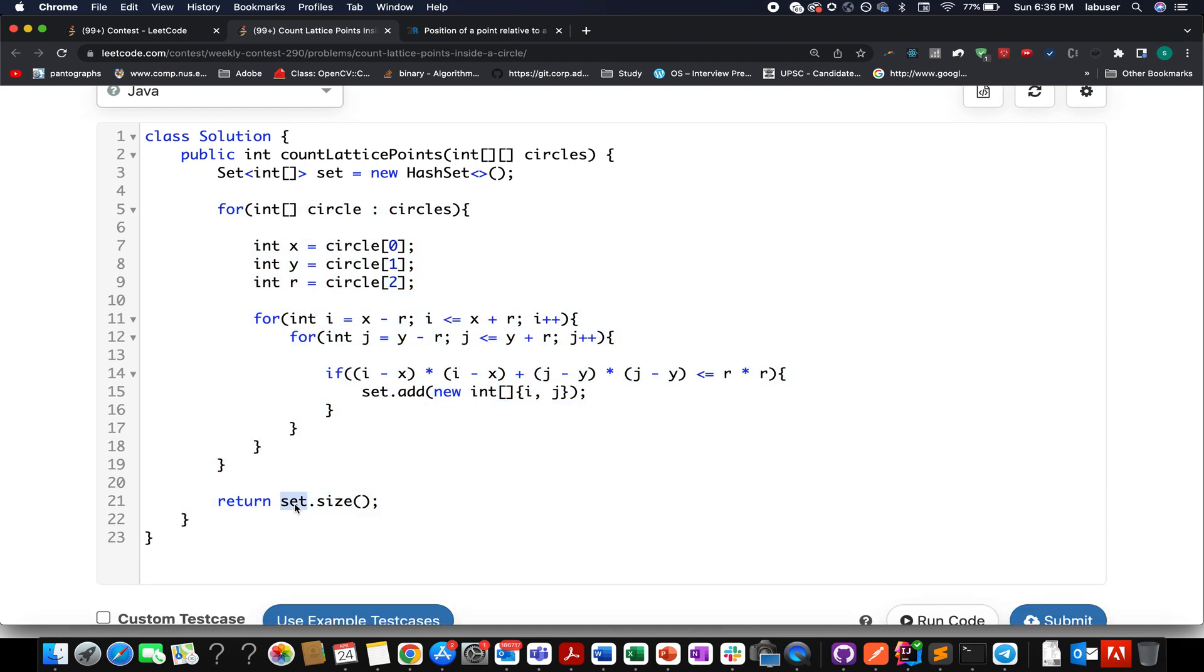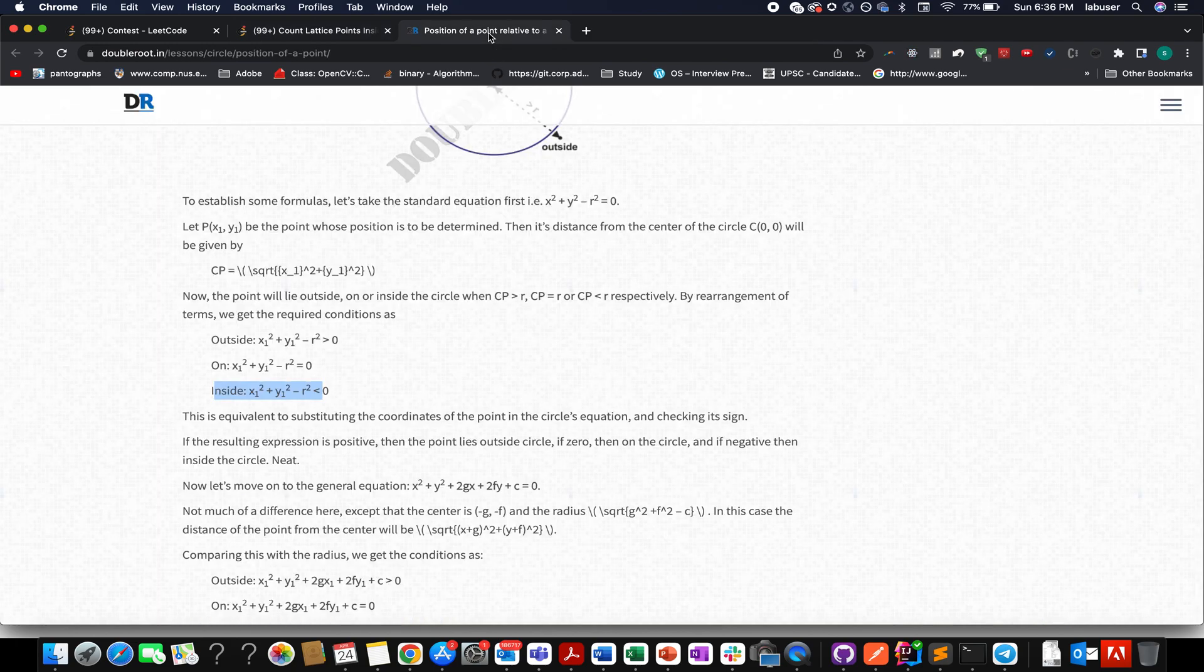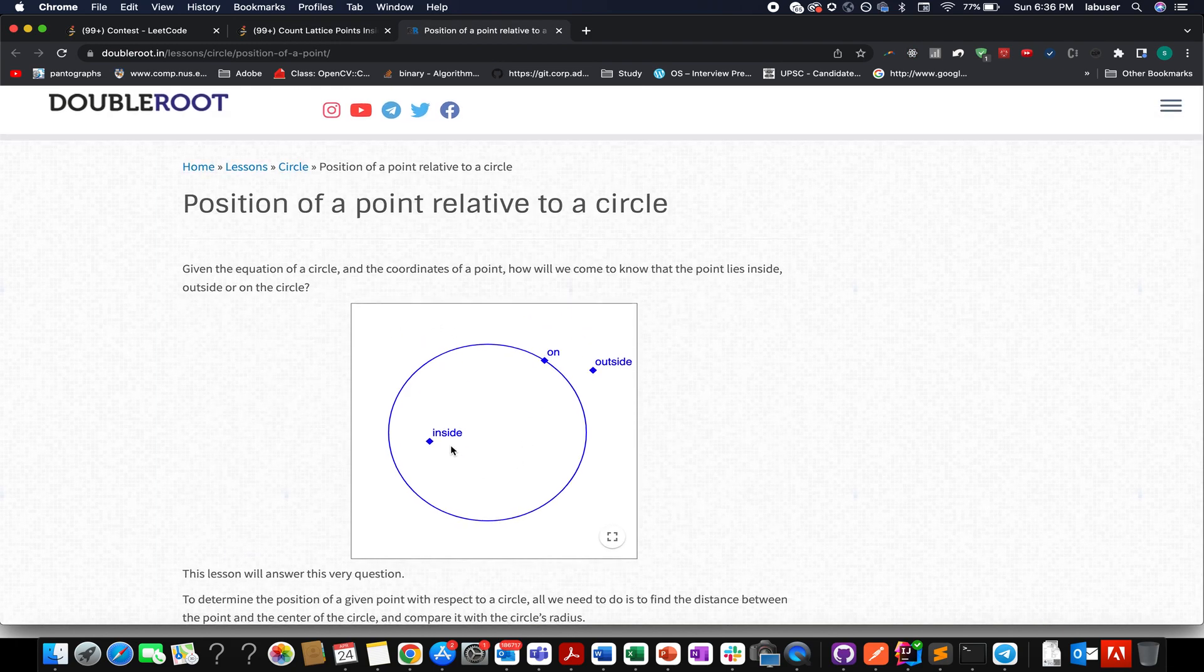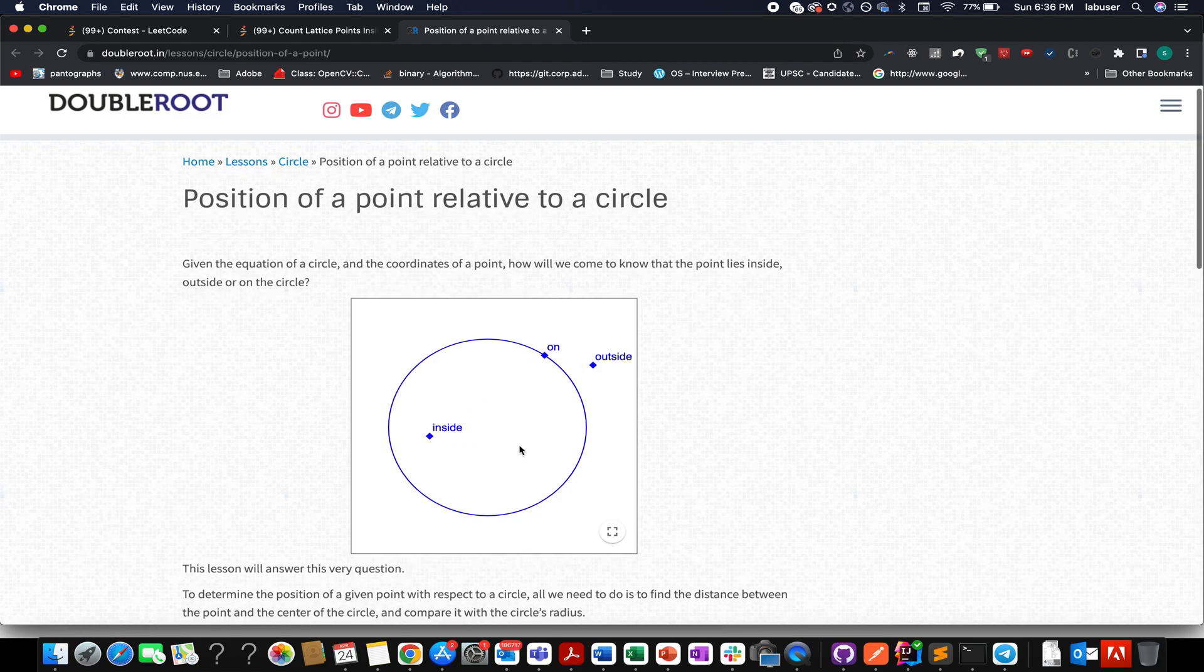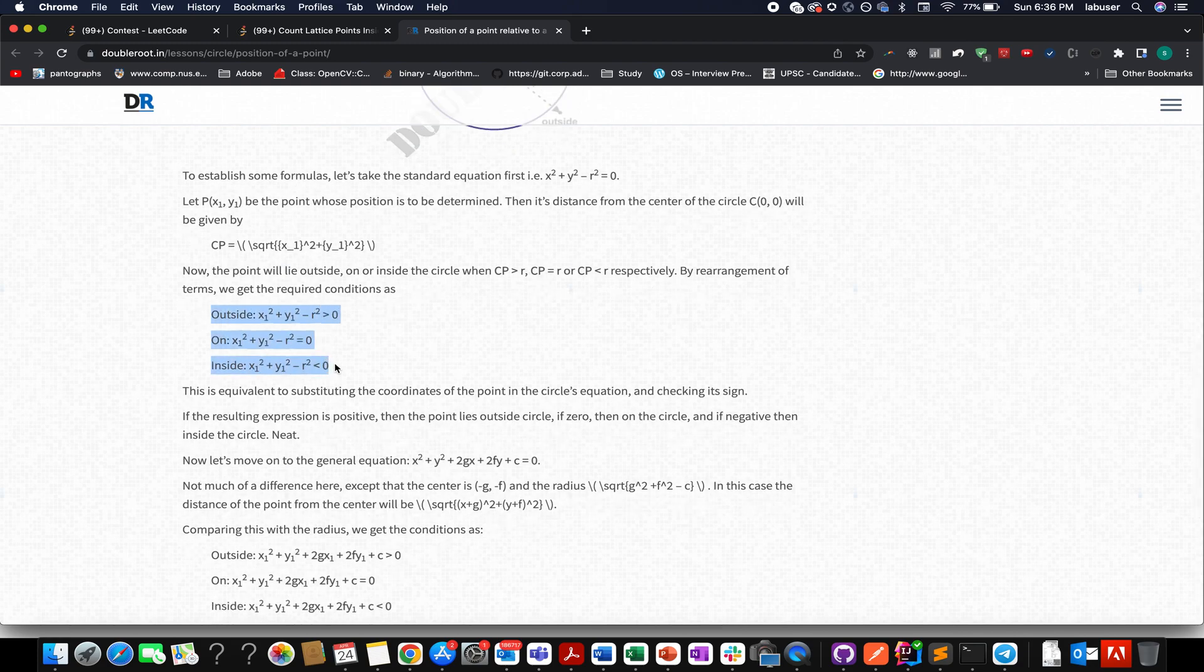If you are confused about this formula, I am attaching a link to an article that clearly shows how to identify whether a point is inside the circle, on it, or outside. I have used the same formula here. x1 and y1 signify the coordinate, and if the distance x squared plus y squared is greater than r squared, it lies outside. If it equals r squared, it lies on the circle. If it is less, it lies inside the circle. I have used these formulas here.